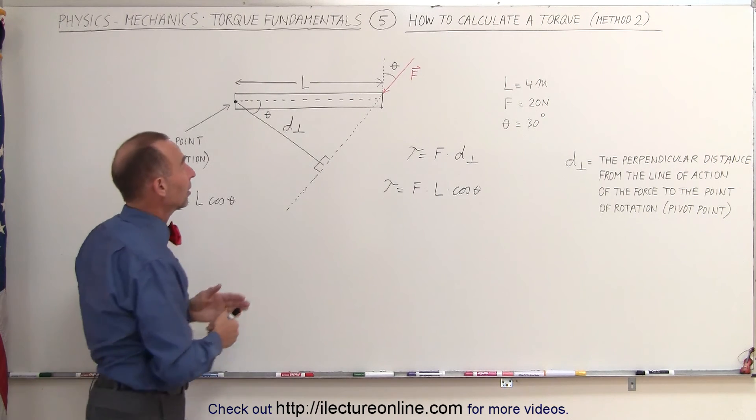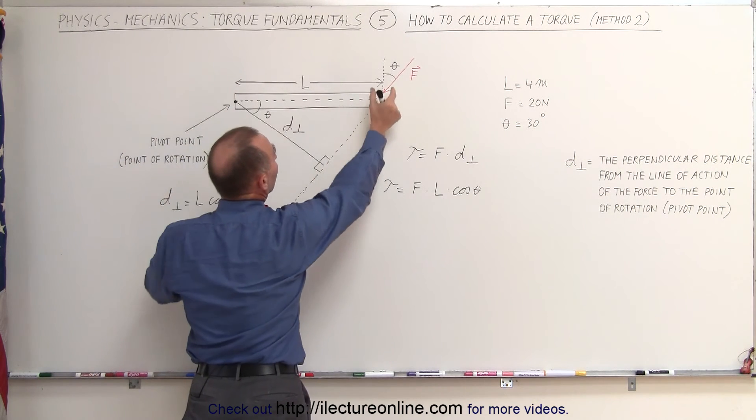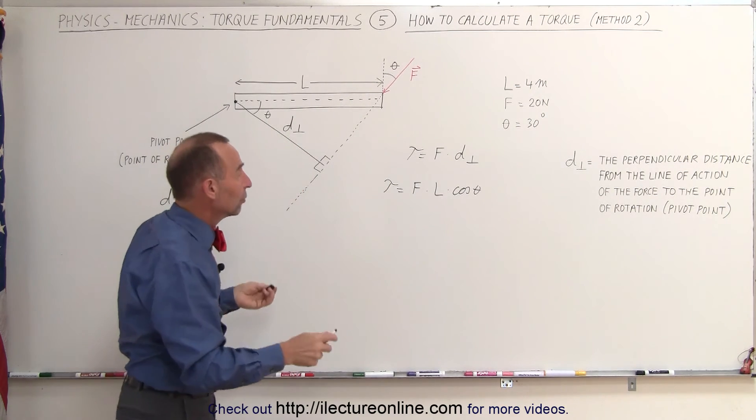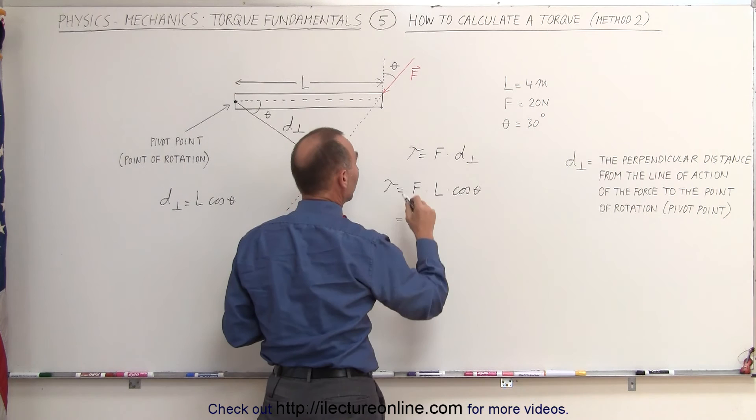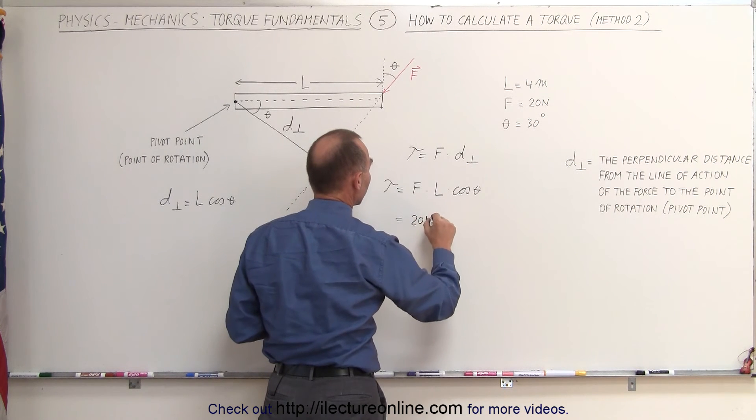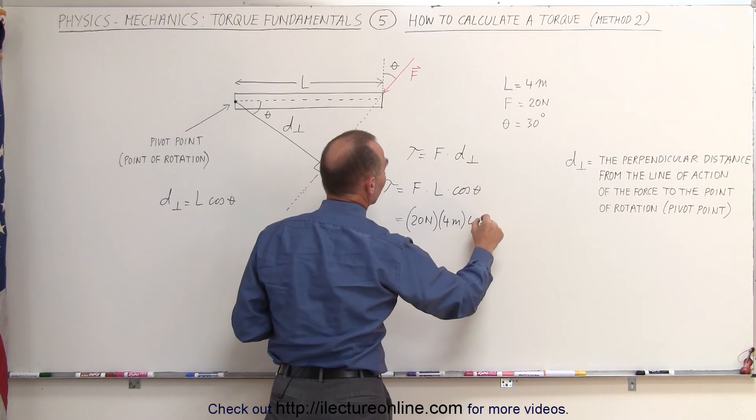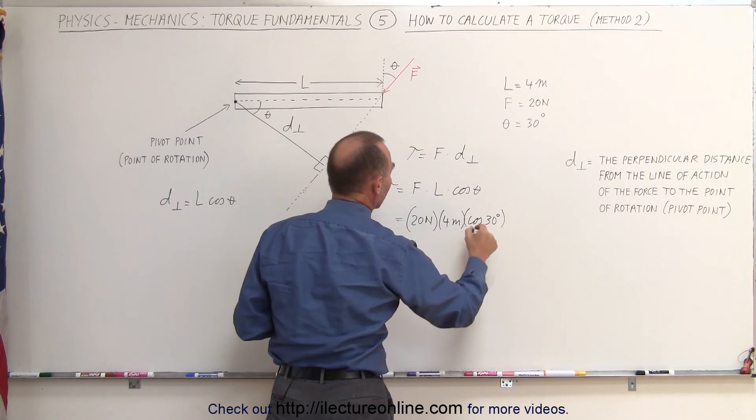As an example, let's say the length here is 4 meters, the angle is 30 degrees, the magnitude of the force is 20 Newtons. All you have to do now is say this is equal to the force of 20 Newtons times the length of 4 meters times the cosine of 30 degrees.